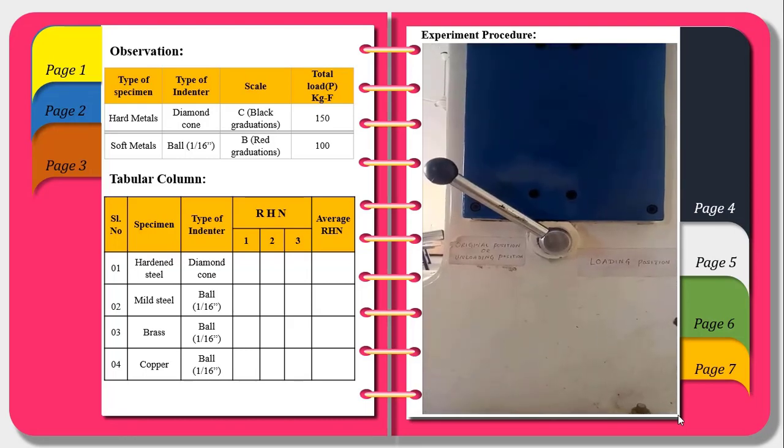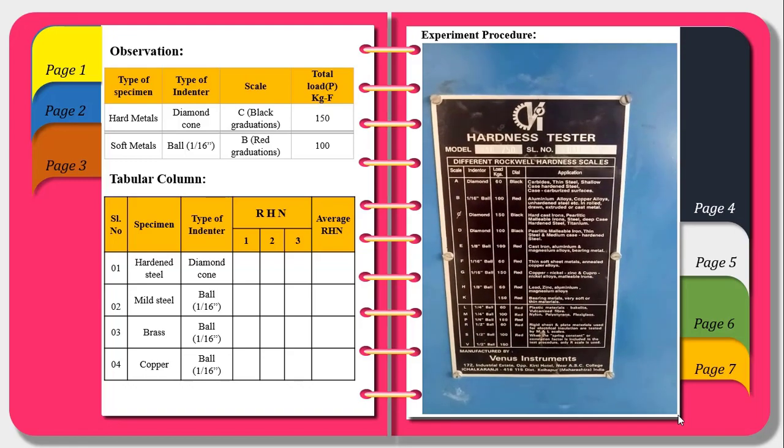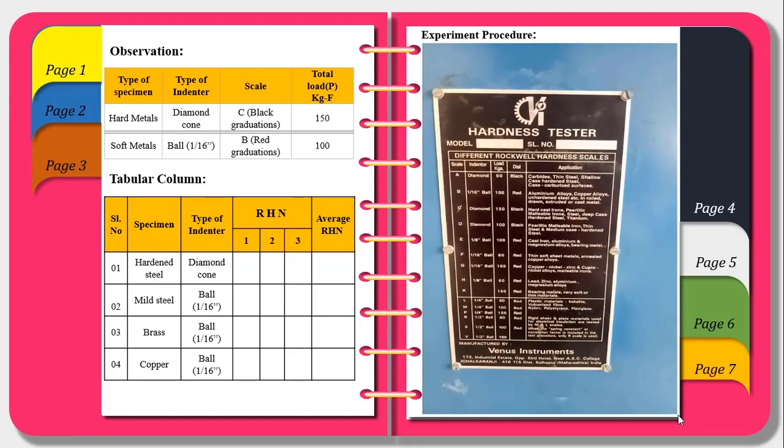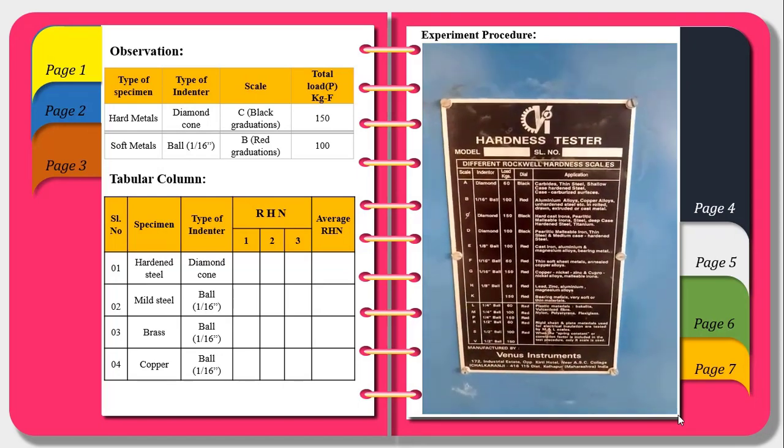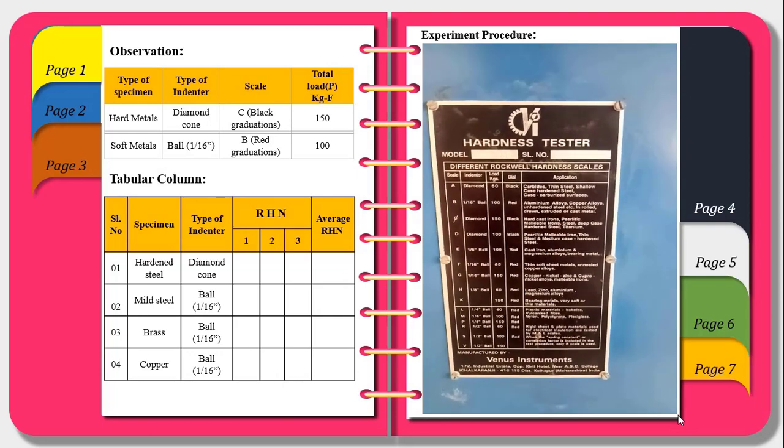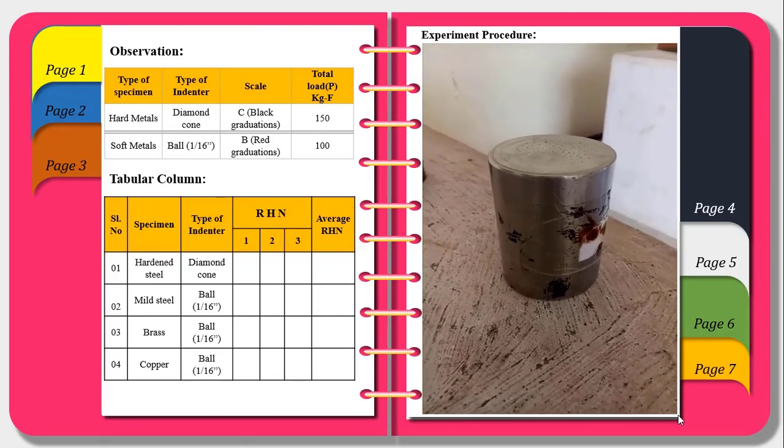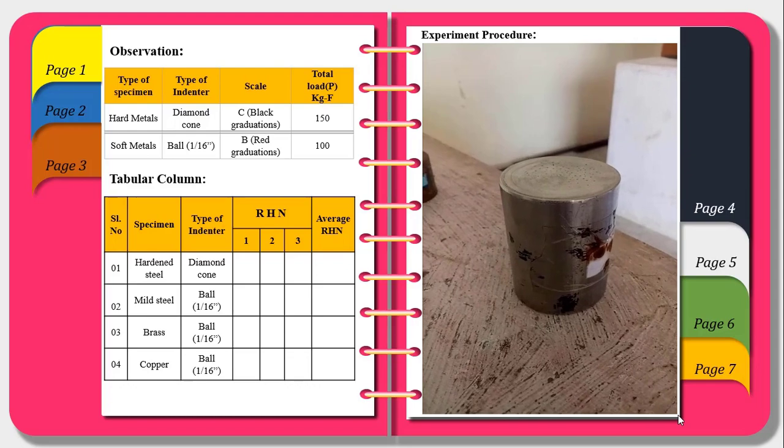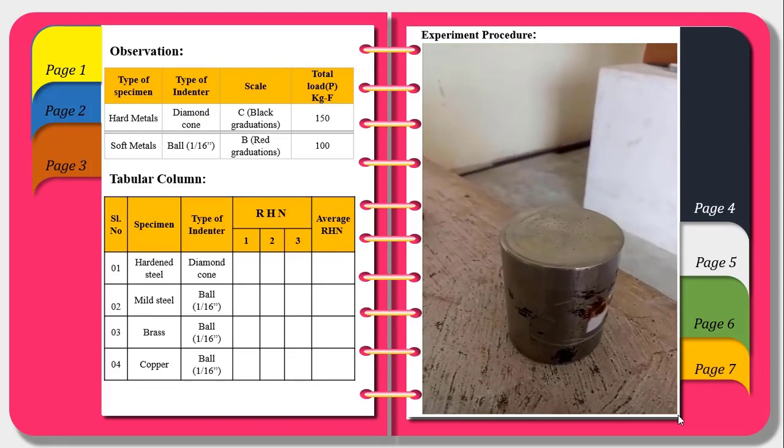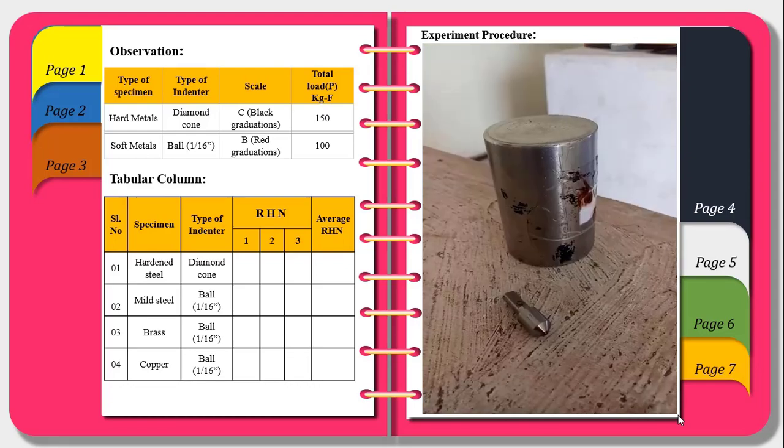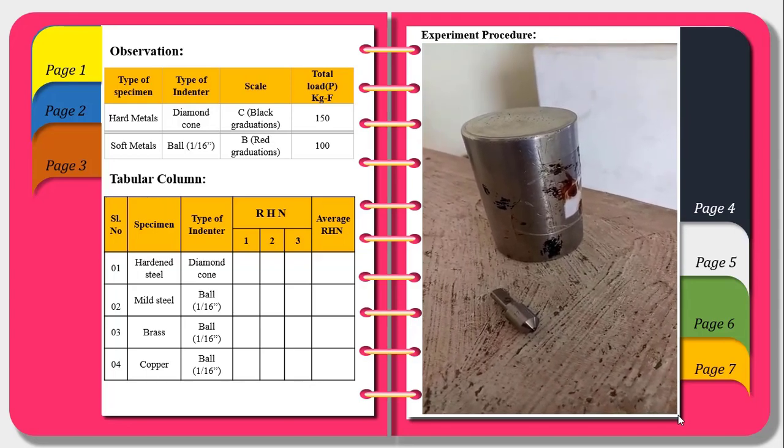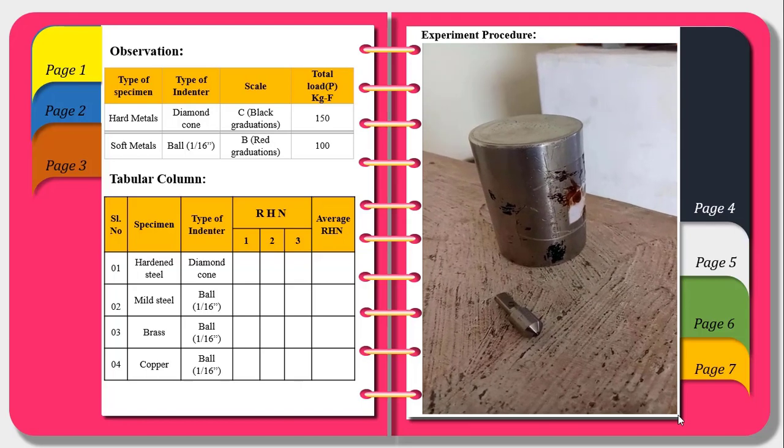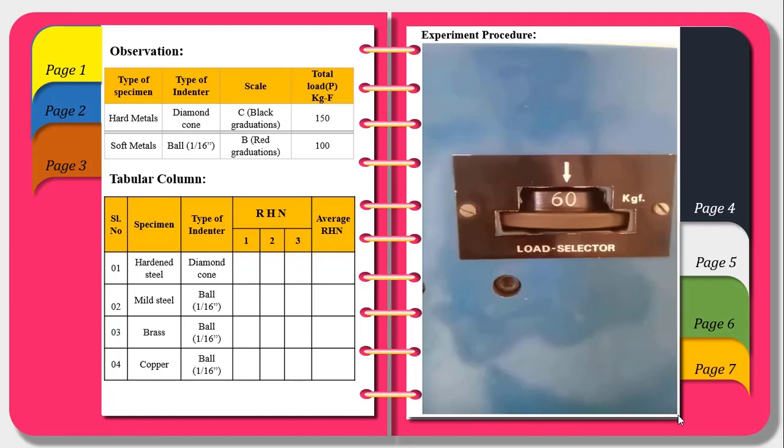Procedure to conduct experiment is: Initially we have to keep the loading lever at unloading position. As mentioned in the chart we have to observe diamond. For diamond cone indenter we have to observe black graduations on the dial. So here I will select the hardened steel specimen and the diamond cone indenter for experimentation. For this the maximum load will be 150 kg force as mentioned in the chart.